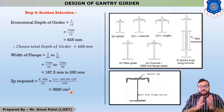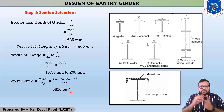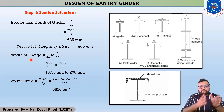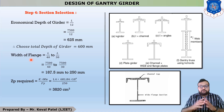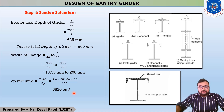In the next lecture, we will select our section based on these three criteria: the selected I section must have a depth less than 625 mm, a flange width in the range of 187.5 to 250 mm, and the combined I plus C section must have a Zp value greater than 3820 cm³. This is the end of today's session. Thank you.